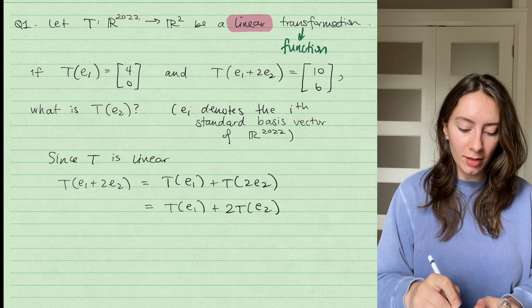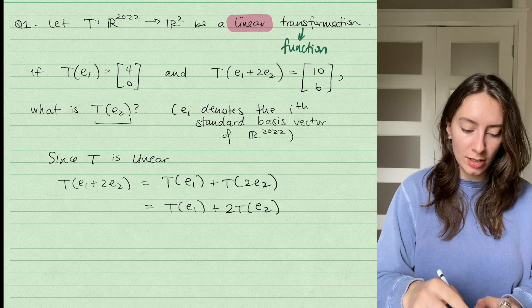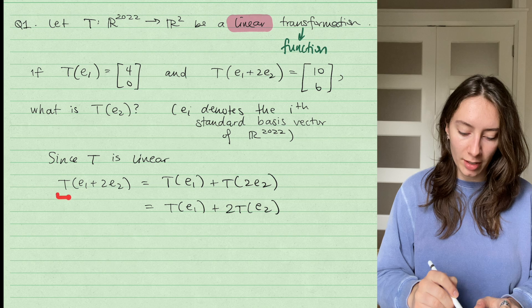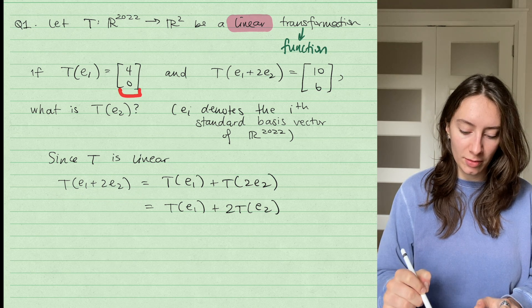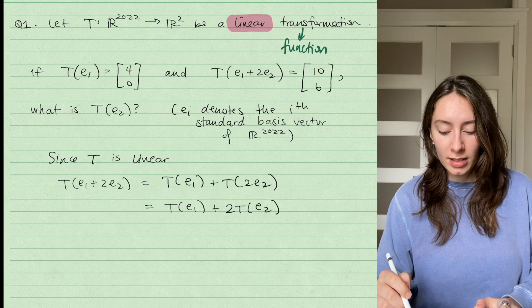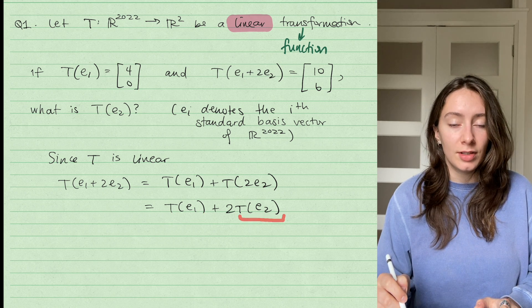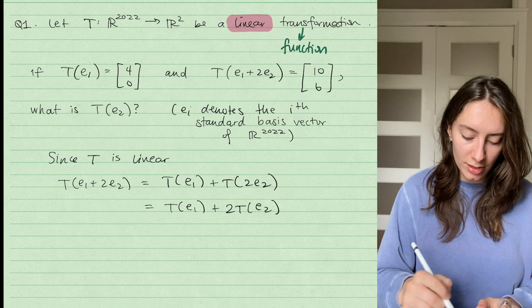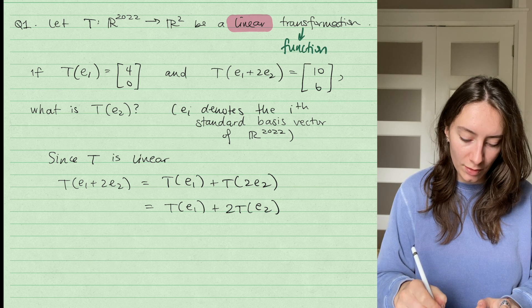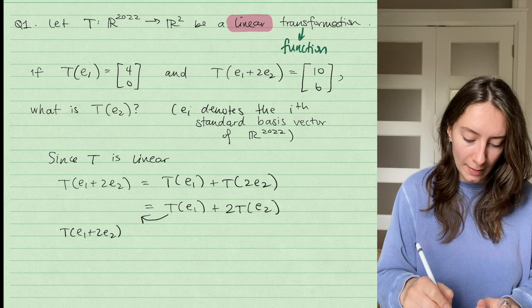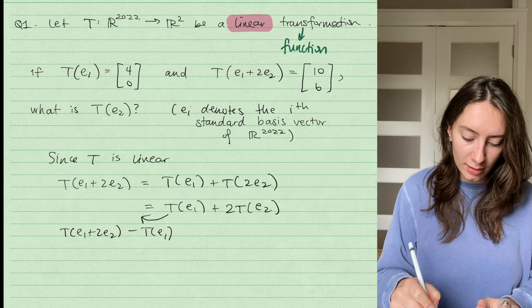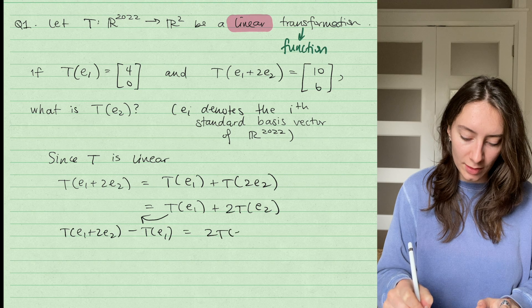And so now what we want to find is T(E_2). So I already have information about what this guy equals from the question, and I also have information about what this guy equals. So all I need to do is rearrange for T(E_2) and I'll be good. So if I rearrange for T(E_2), if I move this term over to the other side, I'll have T(E_1 + 2E_2) - T(E_1) = 2 times T(E_2).